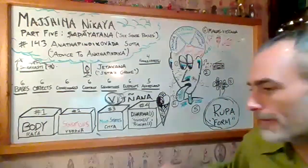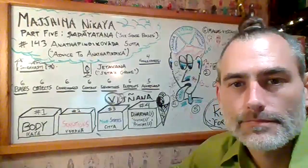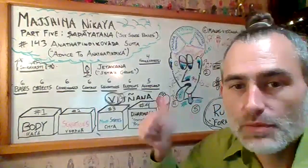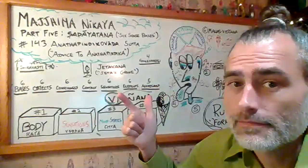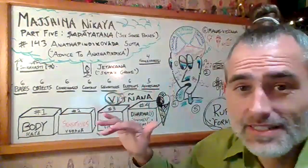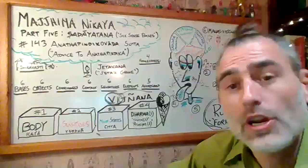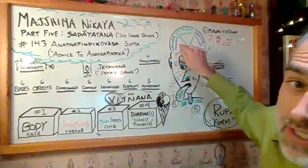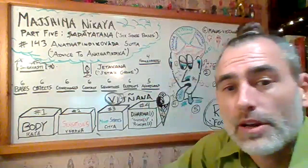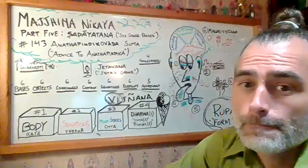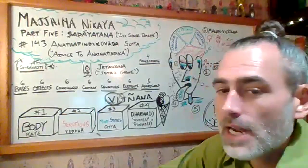Question about the four formless realms: space, consciousness, nothingness, and the fourth is neither perception nor non-perception — neither samjna nor na-samjna. That's the word: samjna.